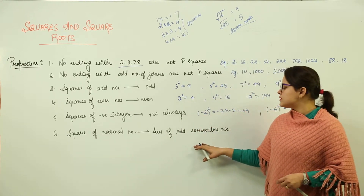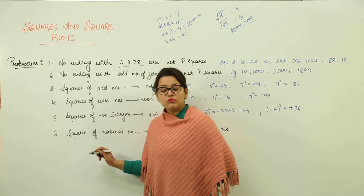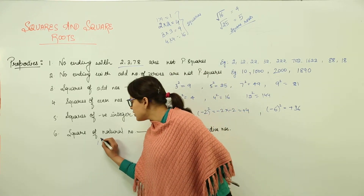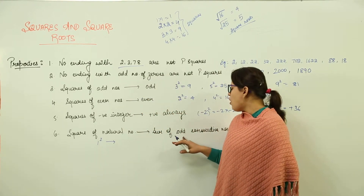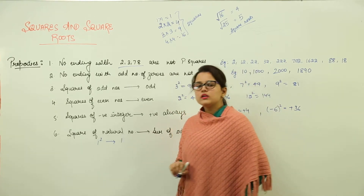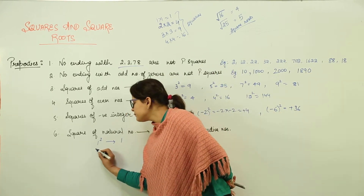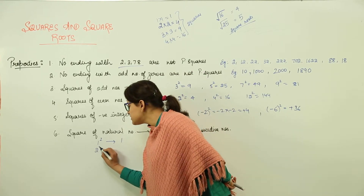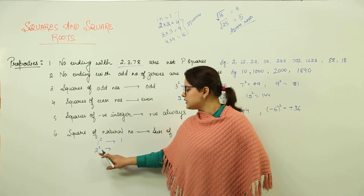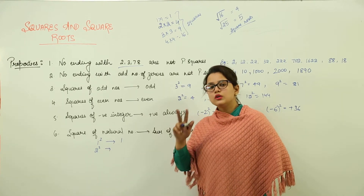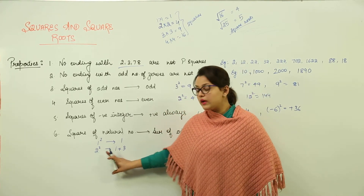The next property says that the square of a natural number is always equal to the sum of consecutive odd numbers. Starting with the first natural number, 1 squared equals 1, which is the first odd number. For 2 squared, we take the first 2 odd numbers: 1 plus 3 equals 4, which equals 2 squared.